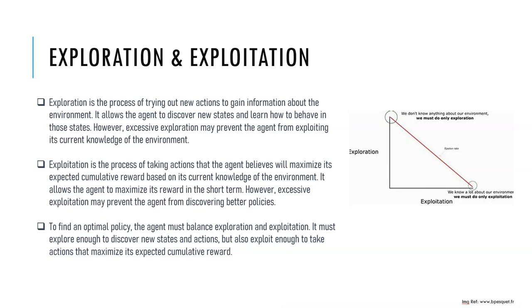Therefore, it is important for the agent to balance exploration and exploitation to maximize its cumulative reward over time. As a real-life example, suppose you are at home and want to go to school. There can be many different paths. If you never explored your area, you would never know the shortcut — or in reinforcement learning terms, the optimal policy to reach school. You have to explore first to discover the best route.